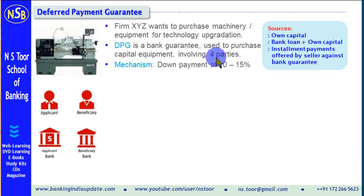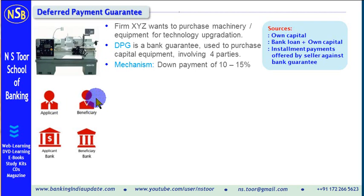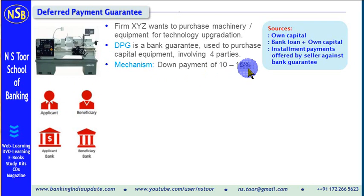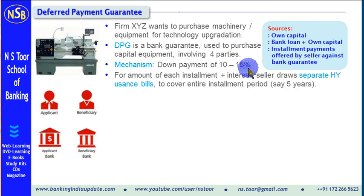What is the mechanism? The buyer wants to buy machinery which the seller is ready to provide on an installment payment basis. The buyer makes a down payment of 10 to 15%, and for the balance amount, for the amount of each installment plus interest, the seller draws separate bills.